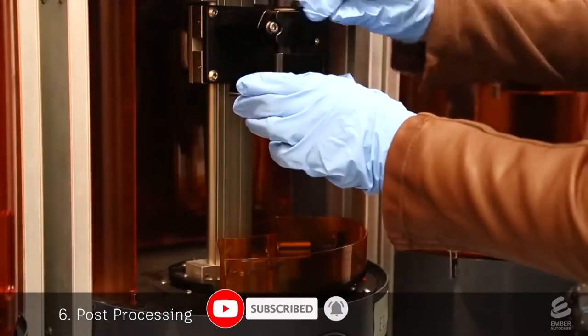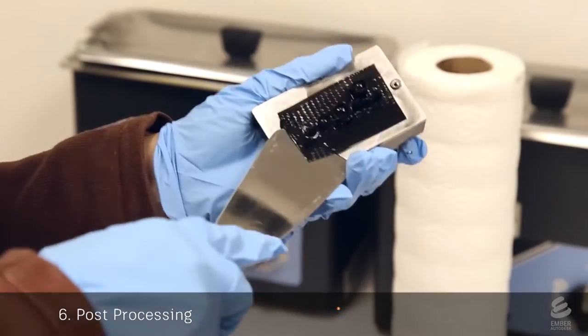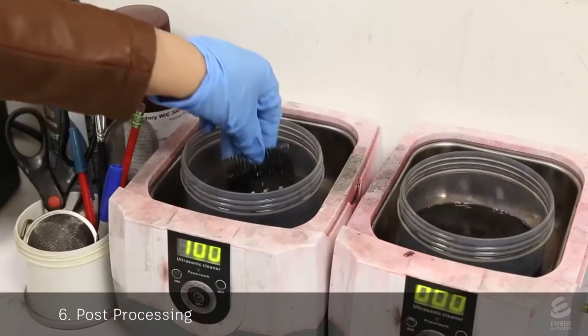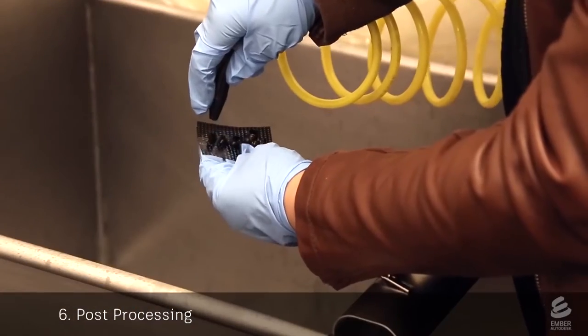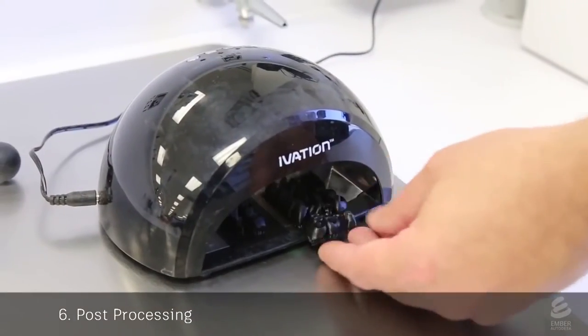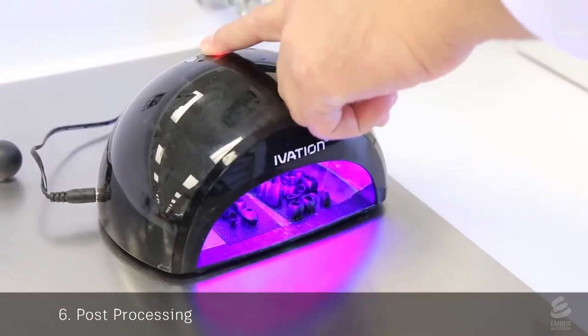After the print is done, a tech removes the build head from the printer, scrapes off the print, washes it in alcohol, and dries it with an air gun. Then the print goes through a post-curing step under a UV lamp.